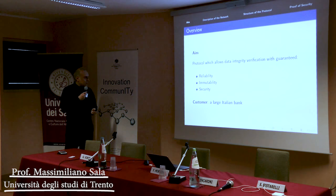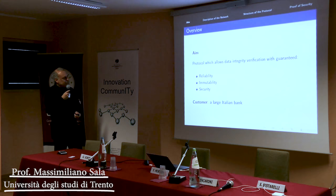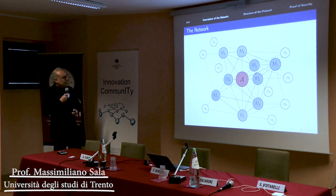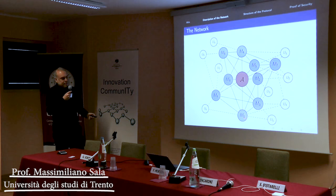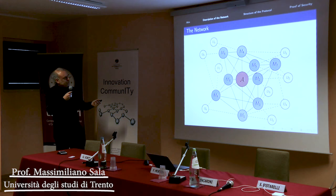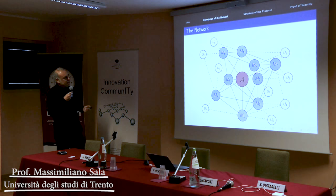We had as a customer a large Italian bank, and they wanted to guarantee data integrity for some documents with reliability, immutability, and security. We have three actors: the users, which you might think of as different banks; the miners; and something we call an authority, although it's not an authority in the sense of the previous talks. The users will send something related to their documents, the miners will put them in blocks in a proxy blockchain, and the authority will send a summary of this proxy blockchain to some public ledgers, like Bitcoin or similar.